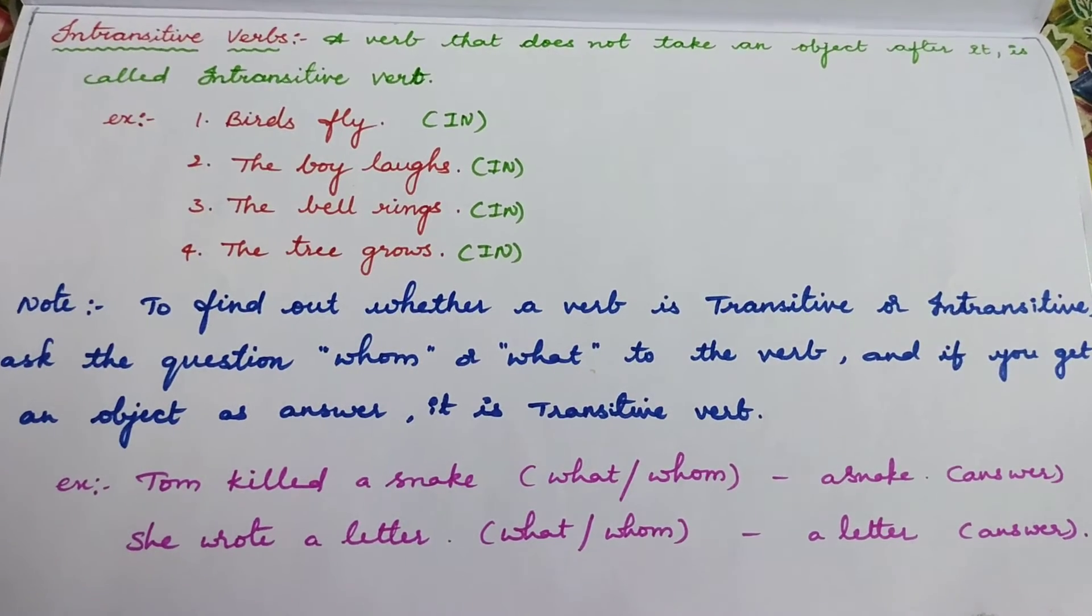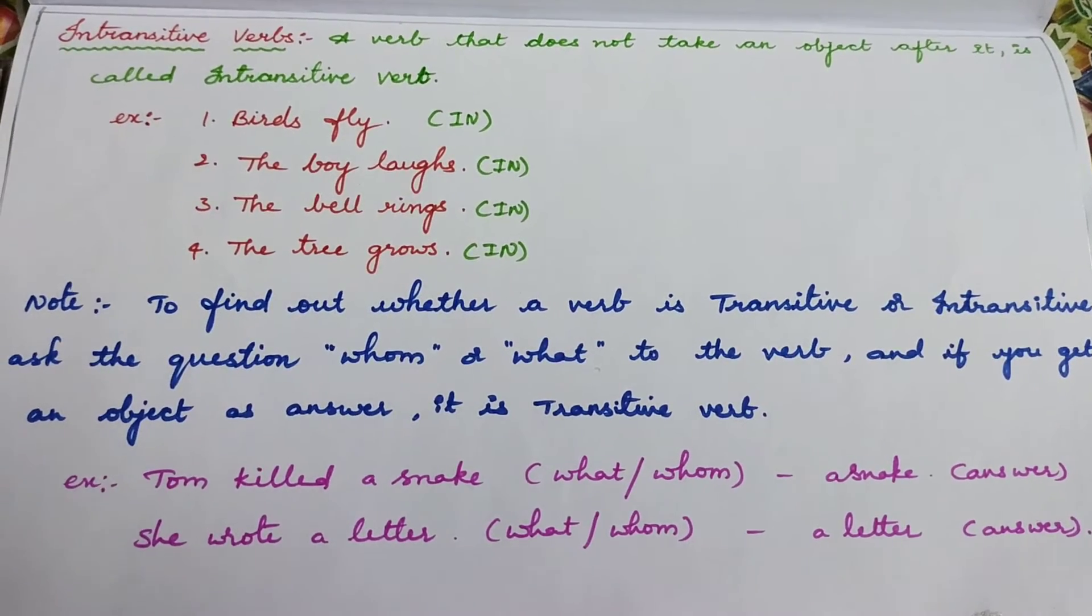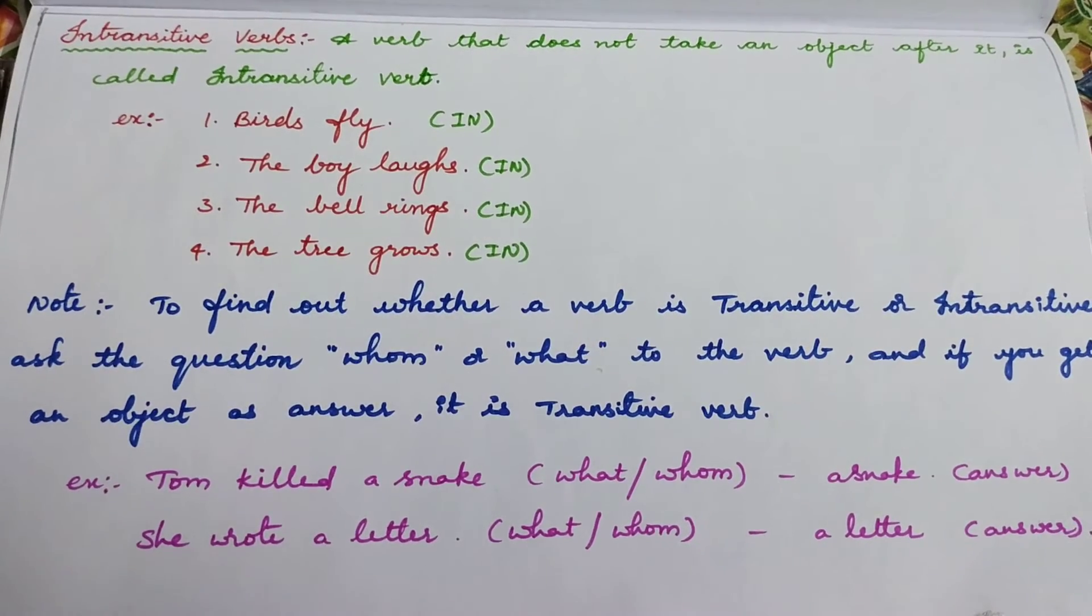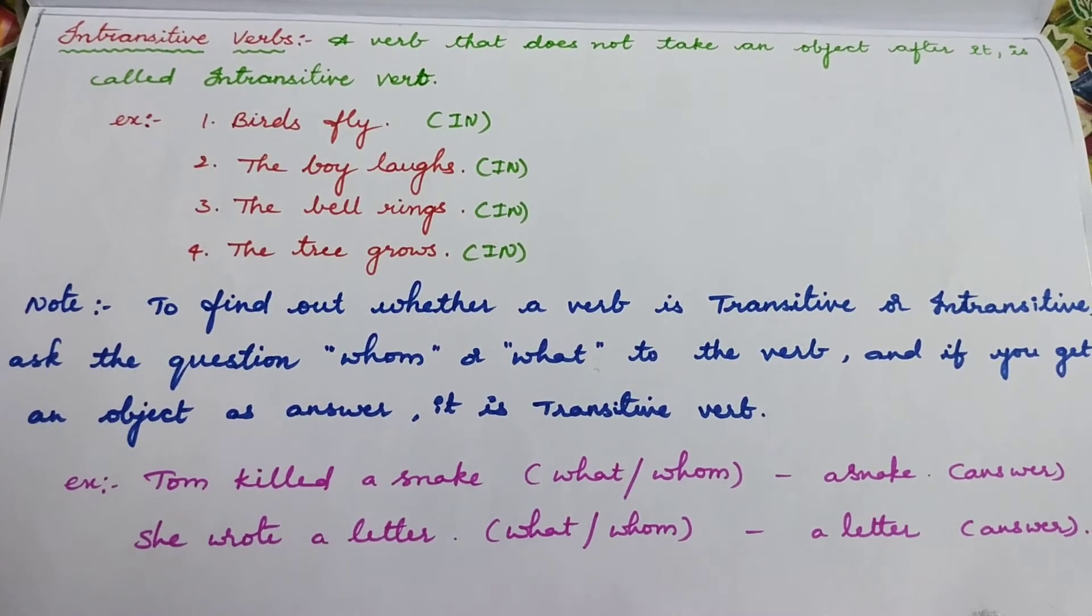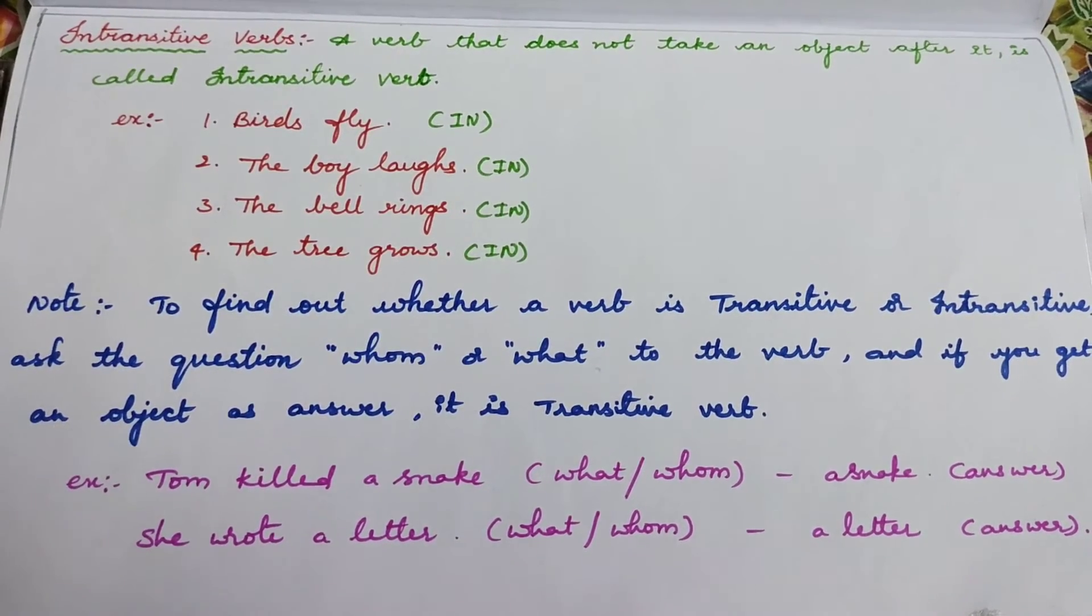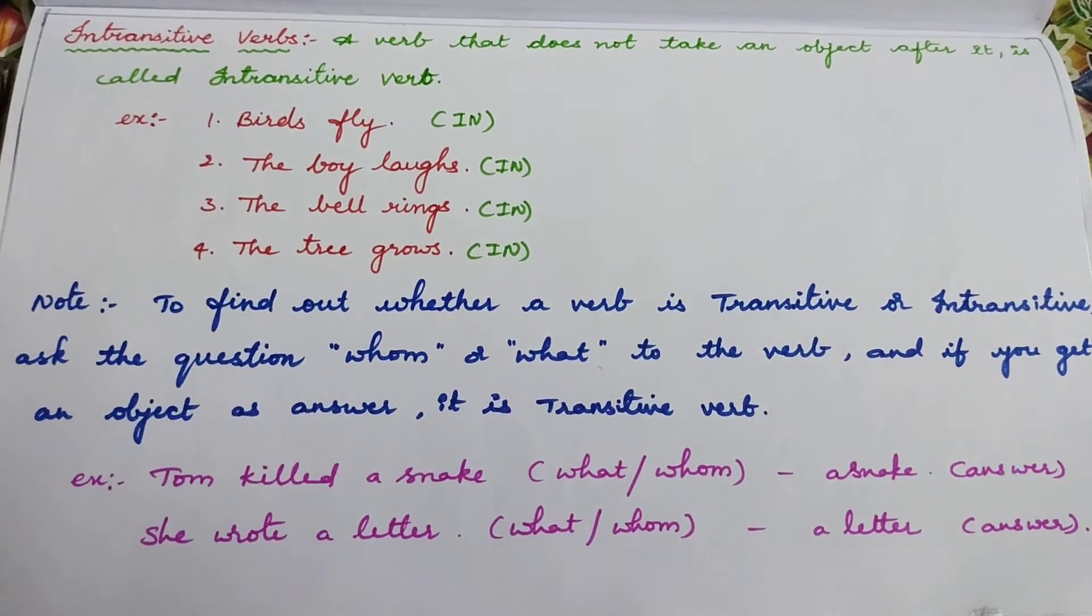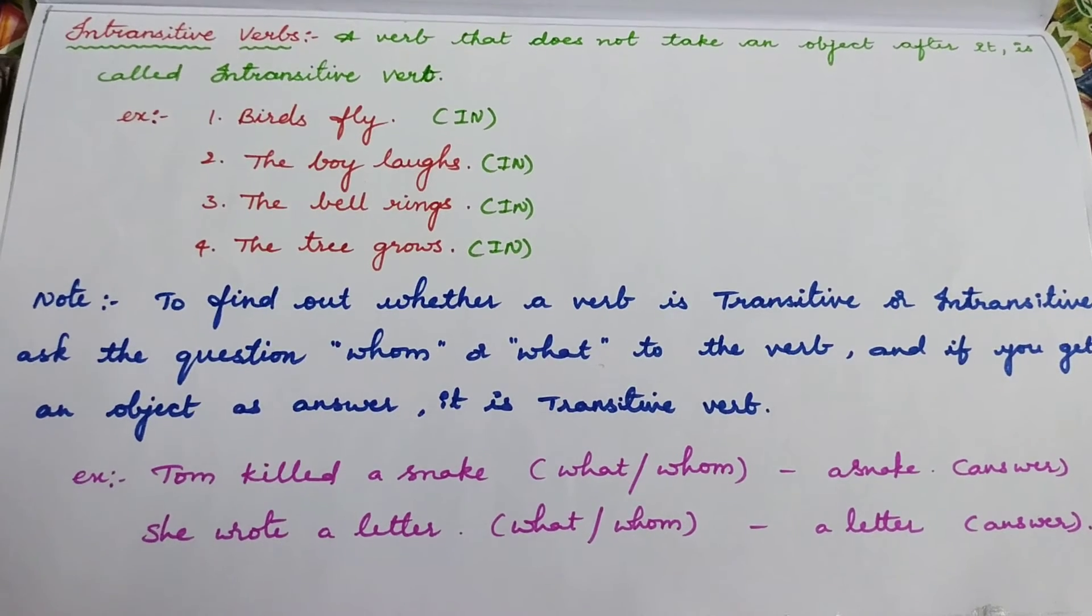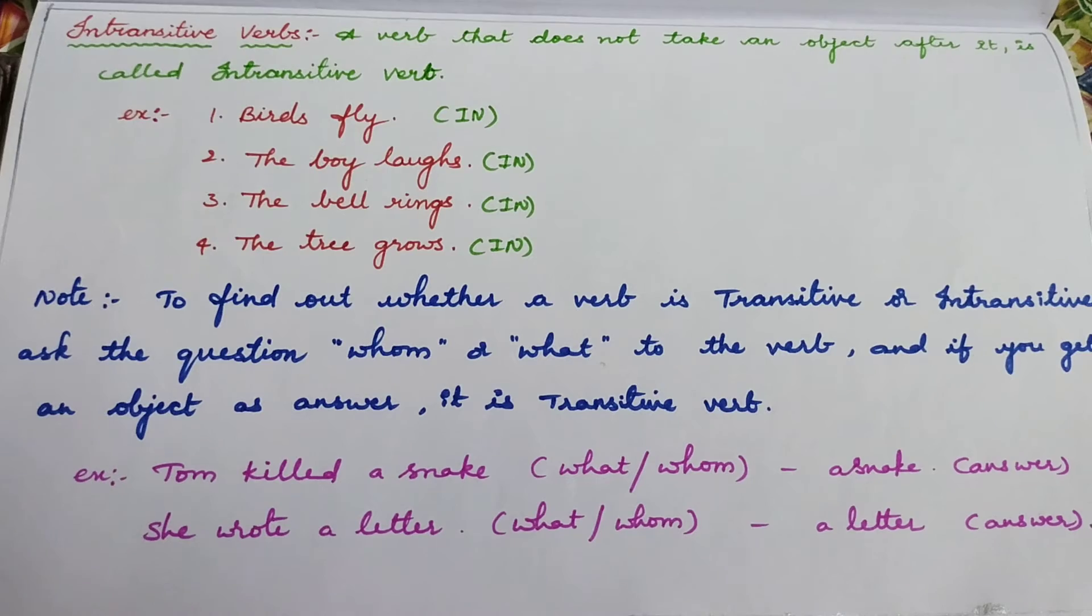If you find the four sentences given here are without objects. Intransitive verbs don't contain objects. As they don't pass, they don't contain objects. Transitive verb transfers action from subject to object. Intransitive verb doesn't transfer. The boy laughs. The bell rings. The tree grows.